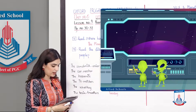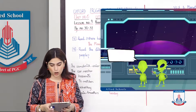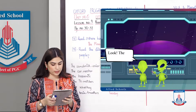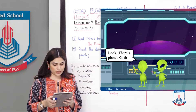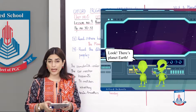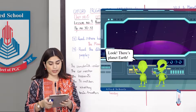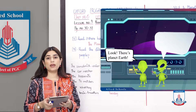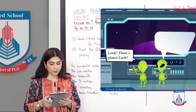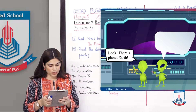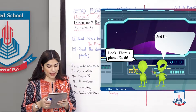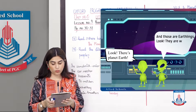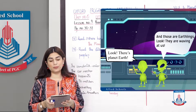Now we are reading the dialogue in your book. Look — there is planet Earth. Who is talking about this? These are the aliens who are looking at the green color. They are talking, and the other alien is saying, 'And those are earthlings. Look, they are waving at us.'